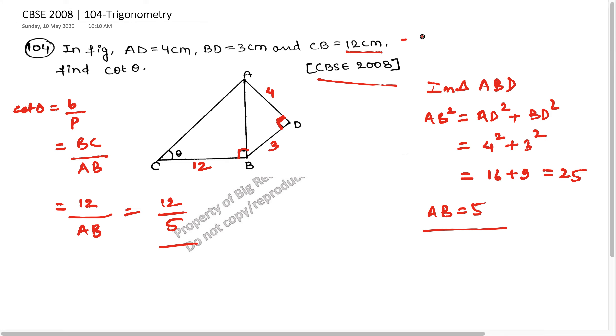So the value of cot theta, which is being asked in the question, is 12 upon 5. I hope you found the solution useful. Do like, share, comment and subscribe. In case you want me to solve any other questions for you, do put down your queries at the WhatsApp number mentioned in the description. Till then, keep working hard, keep practicing hard. Cheers and God bless.